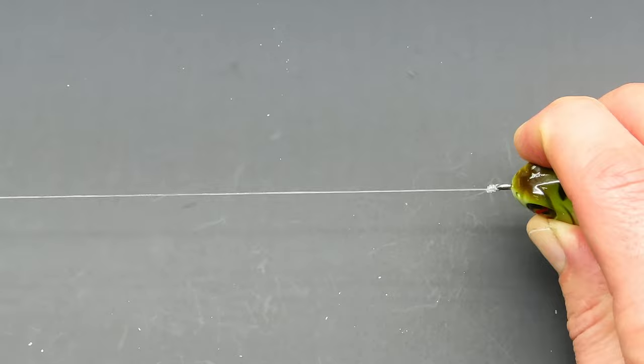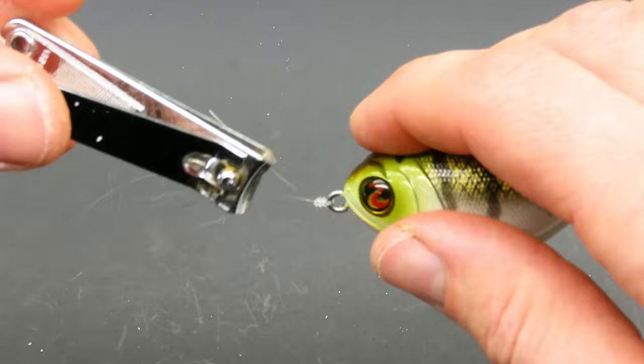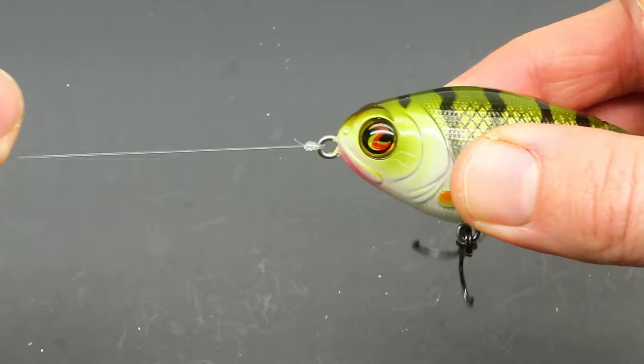Now you can just trim off that tag end. And that is the modified uni knot for braid.